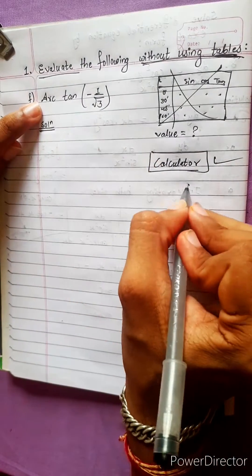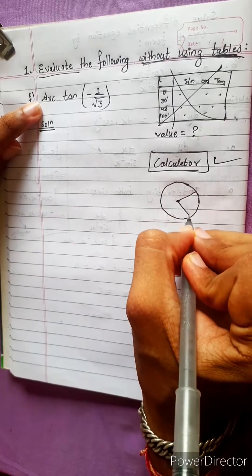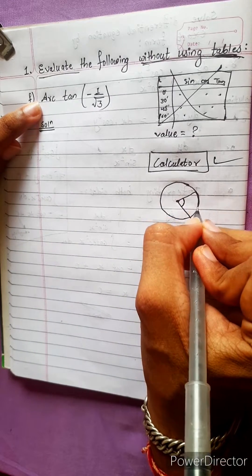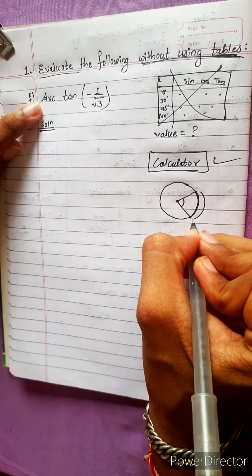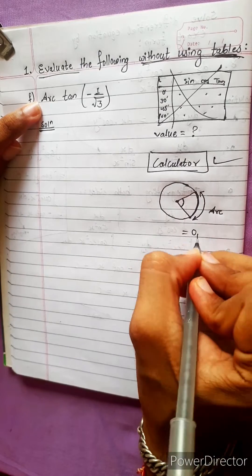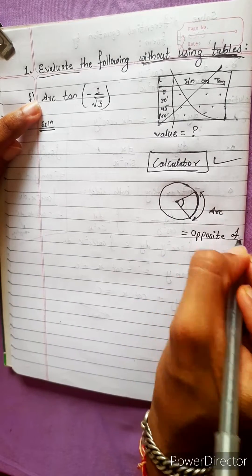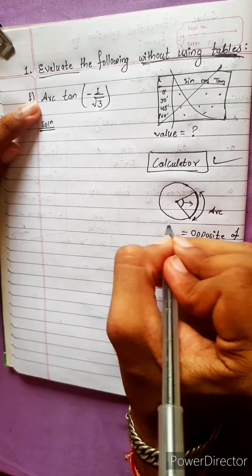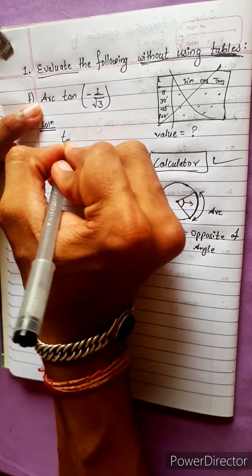Now we have an arc. What is arc? We have a circle with a center. This is the radius. We have an angle. Let's see the length — what is the length? This is the arc. We call it arc. The arc is always opposite to the angle.